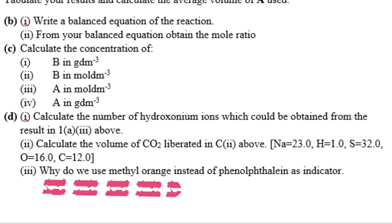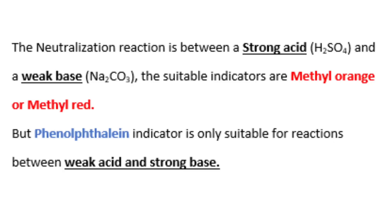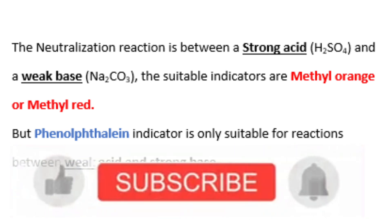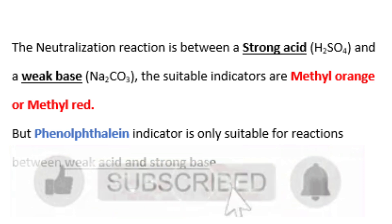The last question: why do we use methyl orange instead of phenolphthalein as indicator? The neutralization reaction is between a strong acid, H₂SO₄, and a weak base, Na₂CO₃. The suitable indicators are methyl orange or methyl red because they work in acidic medium. Phenolphthalein is only suitable for reactions between a weak acid and a strong base, where the medium is basic. For this reaction the medium is acidic, so methyl orange is appropriate. If it were strong acid and strong base, either indicator would be suitable. Subscribe to our channel to see more. Thank you and God bless.